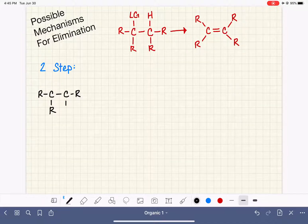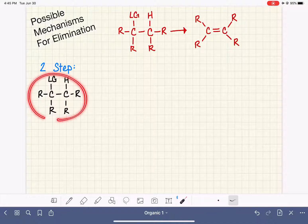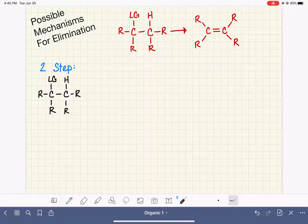again, is that the leaving group falls off. So let's use the same generic type of molecule. In the first step, we get loss of leaving group. Just like with SN1, this is something that just happens spontaneously and causes the formation of a carbocation,